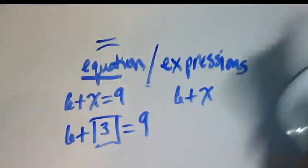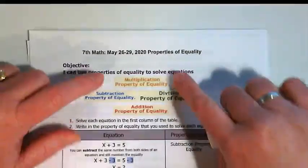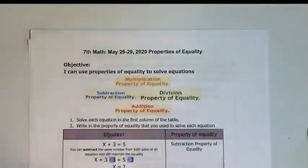But let's go back and use the properties of equality to talk about how we find that. So there's a multiplication one, a division one, an addition one, and a subtraction one.